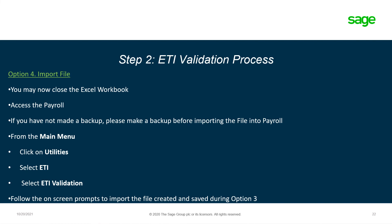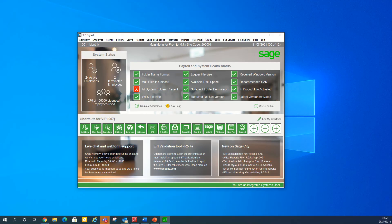Now that the import file was created, you can select option four: import file. You will be prompted with a message that you may now close the Excel workbook. Access the payroll company. If you have not made a backup, please make a backup before importing the file into the payroll. From the main menu, click on utilities, select ETI, select ETI validation, and follow the on-screen prompts to import the file created and saved during option three.